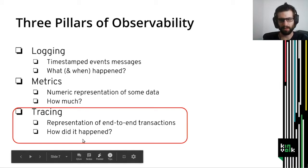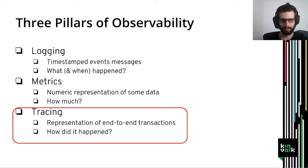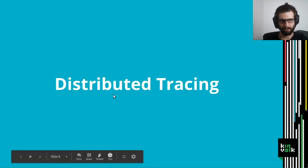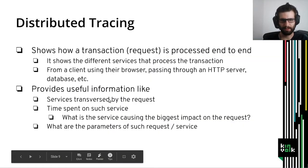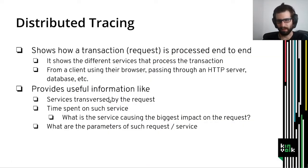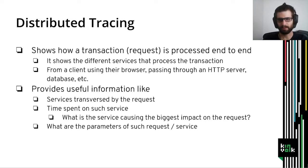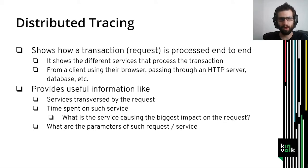Tracing allows us to get a general overview of what happened. It allows us to answer the question: how did it happen? Because it offers complete information about how a request is processed by the different systems. In this talk I will concentrate on tracing. I will present the distributed tracing concepts and all the concepts about OpenTelemetry will be specific for tracing.